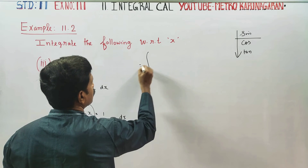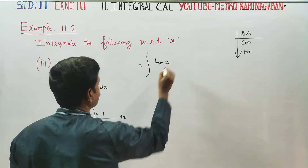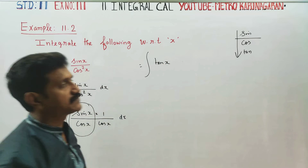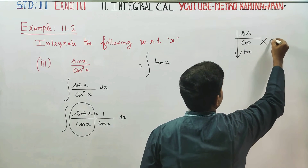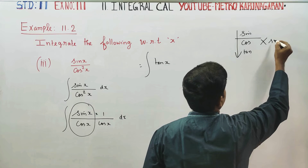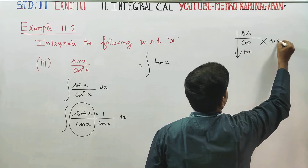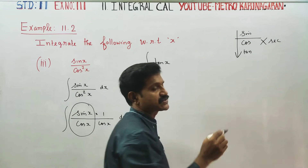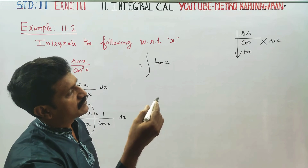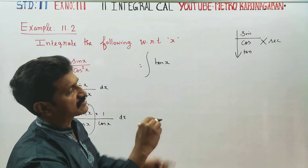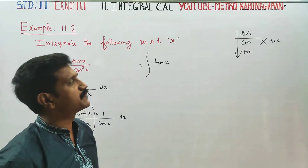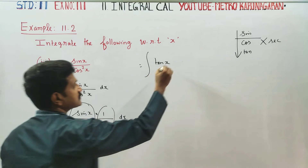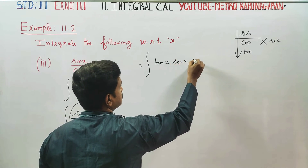I will integrate this with tan x. And 1 by cos — the reciprocal of cos is secant. So 1 by cos can be written as secant x. Therefore the integrand becomes tan x times secant x dx.